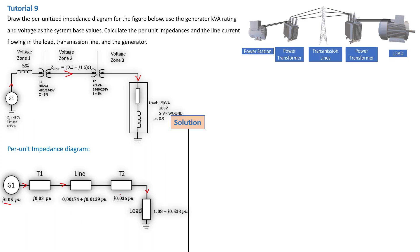Why? Because we have transformers. The current flowing into the transformer is not the same as the current flowing out of the transformer, except if it is a one-to-one transformer — which means it is neither a step-down nor a step-up, basically just an isolation transformer.